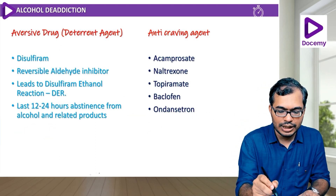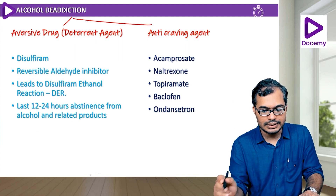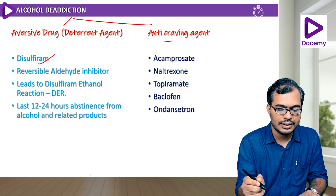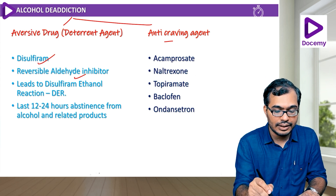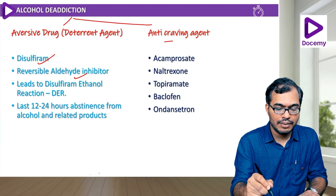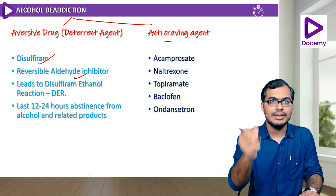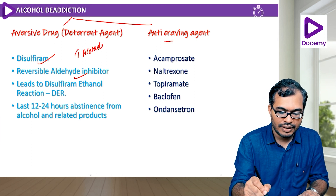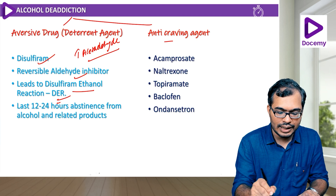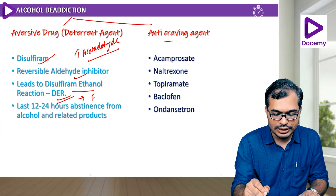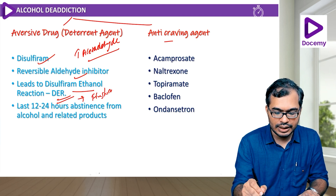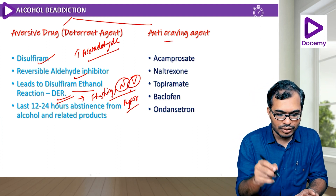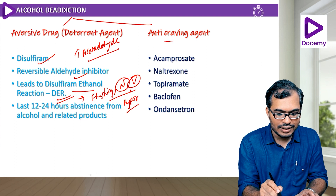Coming to alcohol de-addiction, we have two types: deterrent treatments and anti-craving treatments. In deterrent agents, disulfiram is a deterrent agent — it is a reversible aldehyde dehydrogenase inhibitor. When a patient consumes alcohol with disulfiram, there is accumulation of acetaldehyde, leading to the disulfiram-ethanol reaction, causing flushing, hypotension, nausea, and vomiting — sudden unpleasant effects.